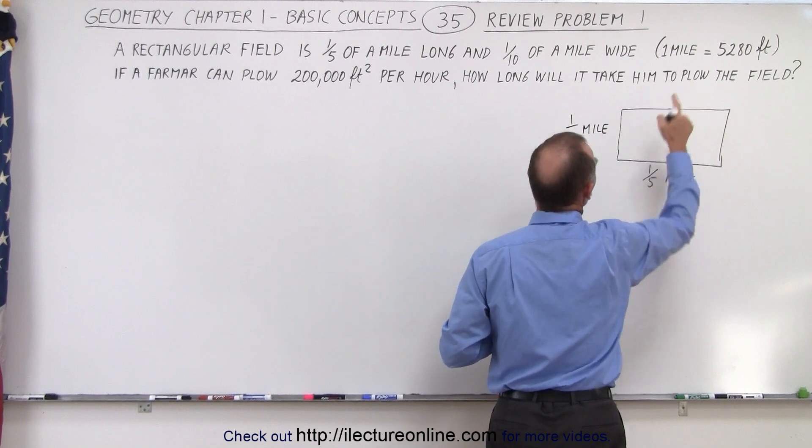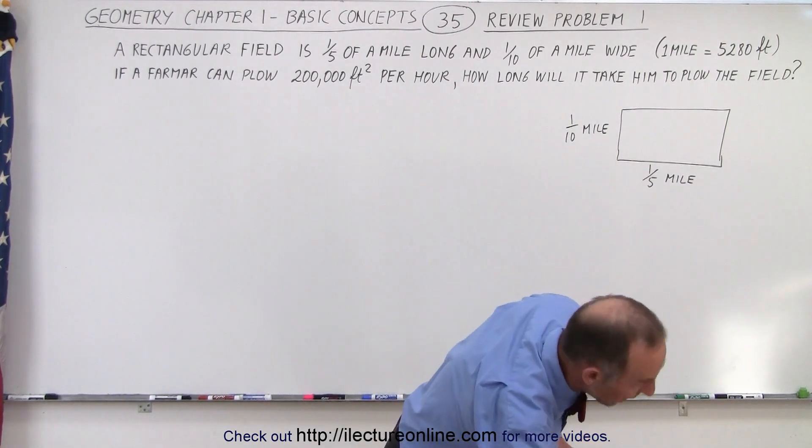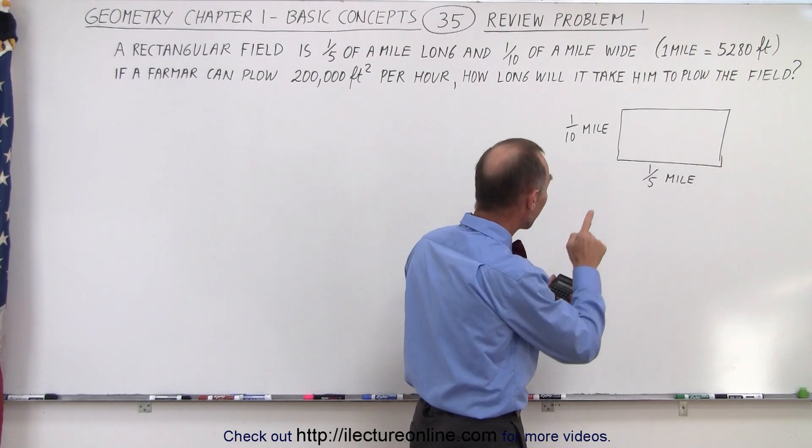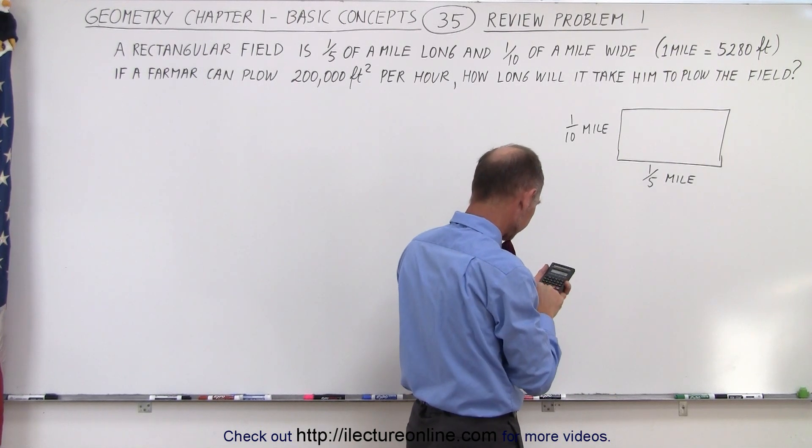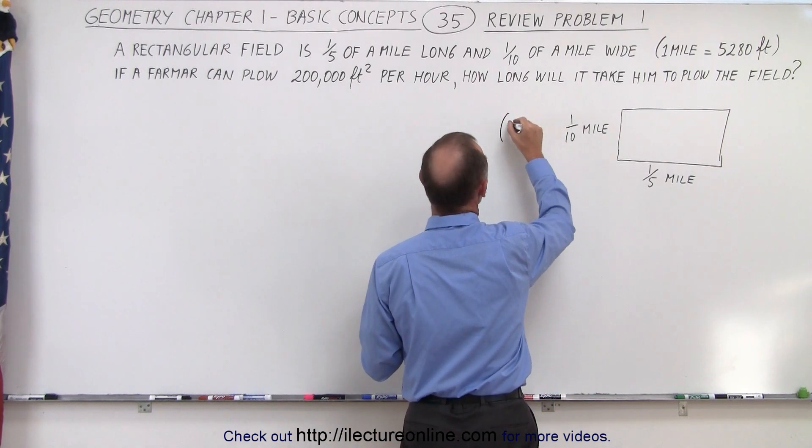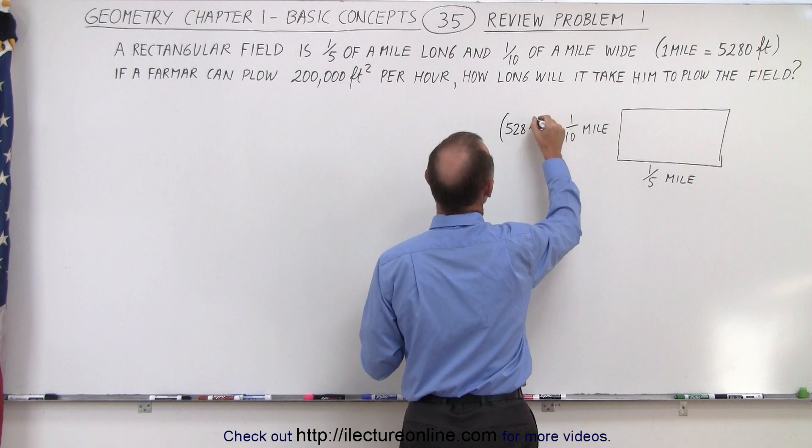And we know that a mile is 5,280 feet. So we take 5,280 feet and divide it by 10. Well we don't need a calculator for that right? So that would be equal to 528 feet.